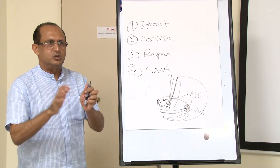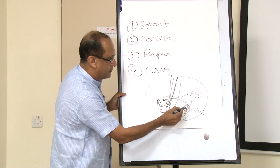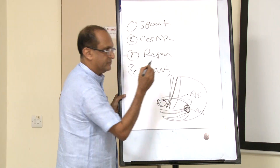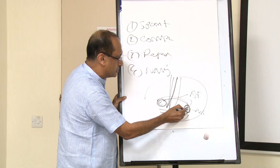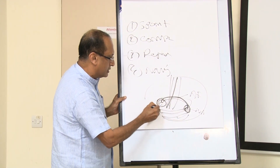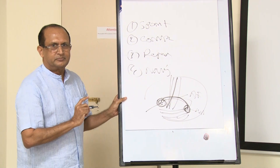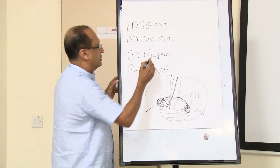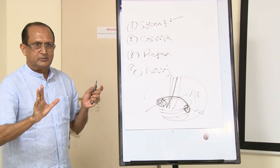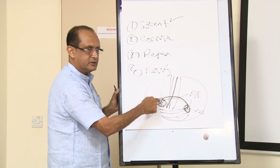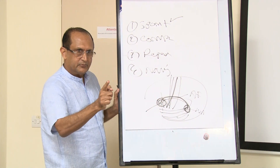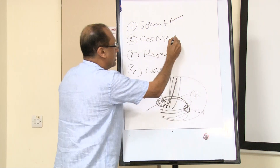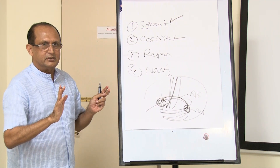When talking to a person, the command given is registered by the Wernicke's area. The Wernicke's area then gives instruction through the arcuate fasciculus to the Broca's area to reply. If there is a lesion in the Broca's area, spontaneous speech will be reduced — even though the Wernicke's area is giving instruction, the Broca's area is damaged. So spontaneous speech will be reduced, but comprehension is intact.